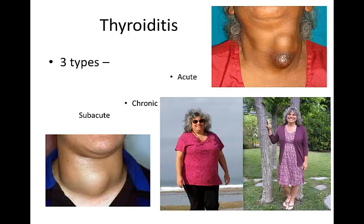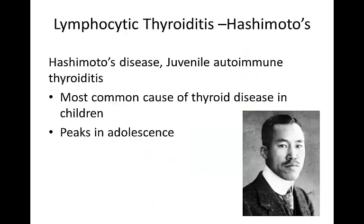Cell-mediated immunity may play a significant role in the pathogenesis of chronic thyroiditis, and there may be a genetic predisposition. If untreated, the disease runs a slow, progressive course, leading eventually to hypothyroidism. Hashimoto's disease is also called juvenile autoimmune thyroiditis. It is the most common cause of thyroid disease in children, with the largest percentage of juvenile hypothyroidism.